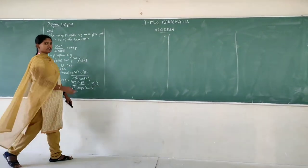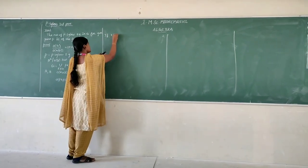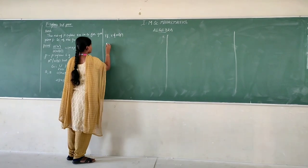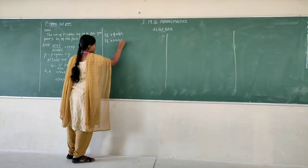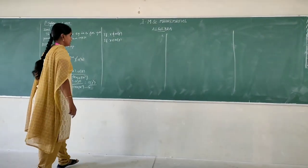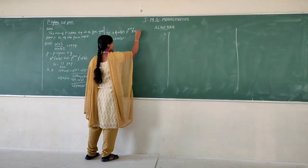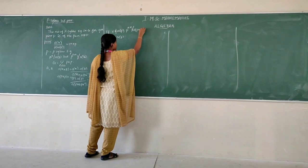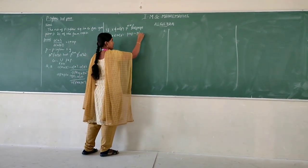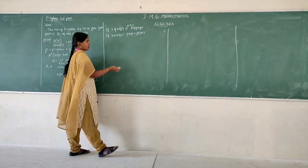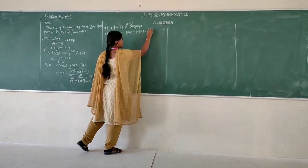Now we consider two conditions. The first condition is if x does not belong to the normalizer of P, and the second condition is if x belongs to the normalizer of P. Under the first condition, P power n plus 1 does not divide the order of PxP. Under the second condition, PxP equals PxP, which simplifies to P squared x.